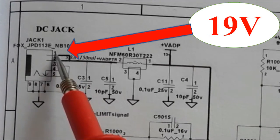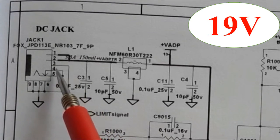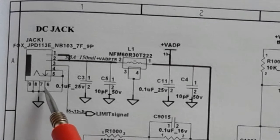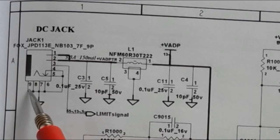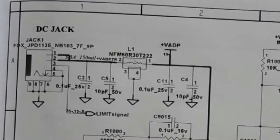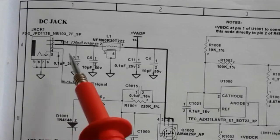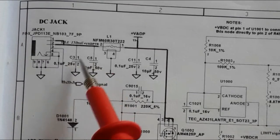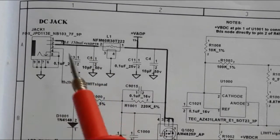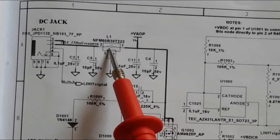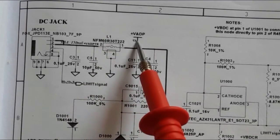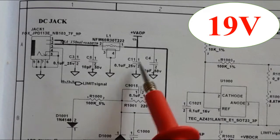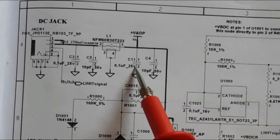Here we have the power rail with three pins, and here is the ground — all these pins are connected to ground. The power jack is connected to the inductor, then to the four capacitors, giving us the V adapter of about 19 volts depending on the laptop type.